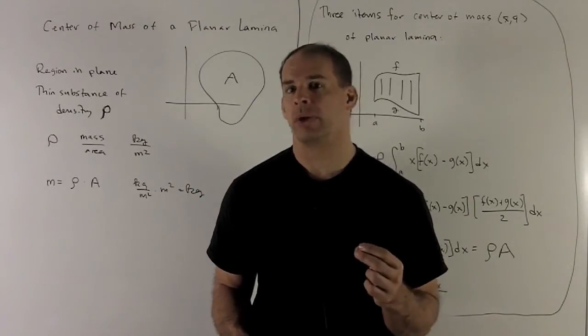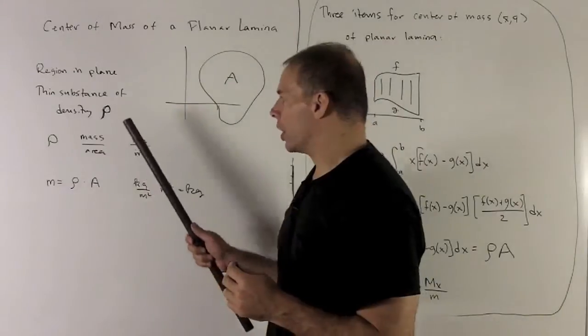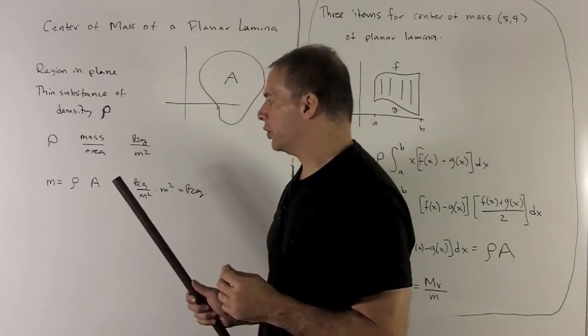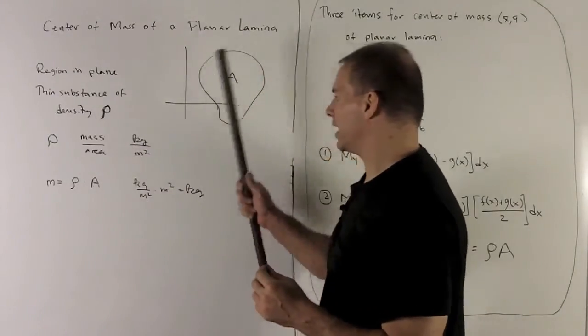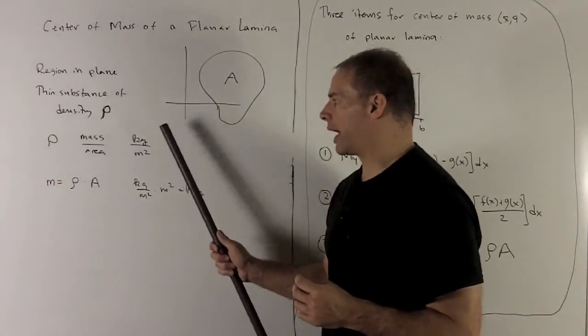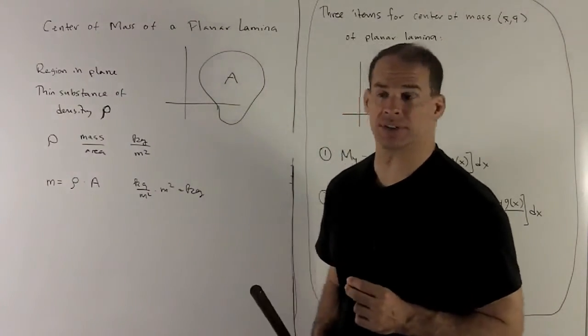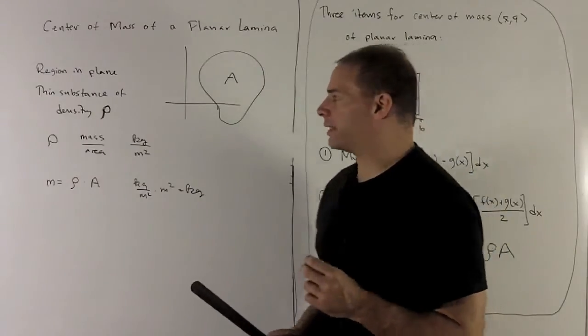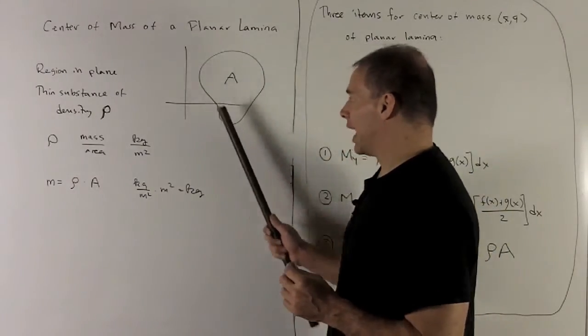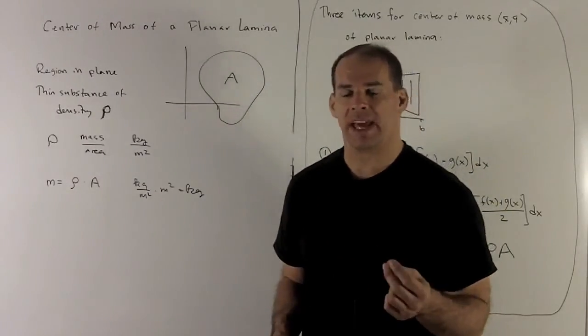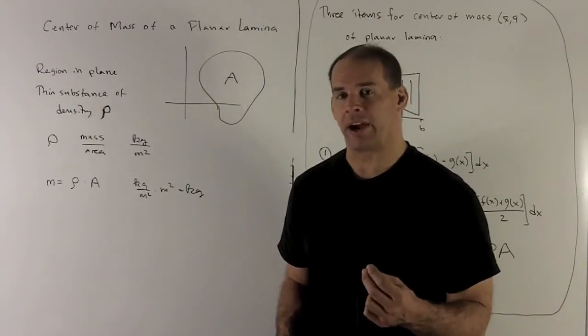Let's quick review of density. So, rho is my density. The units are going to be mass per area in this case, so it'll be kilograms per meter squared, for instance. If I want to get the mass of my planar lamina, it has uniform density of rho. So all I need to do is multiply by the area.